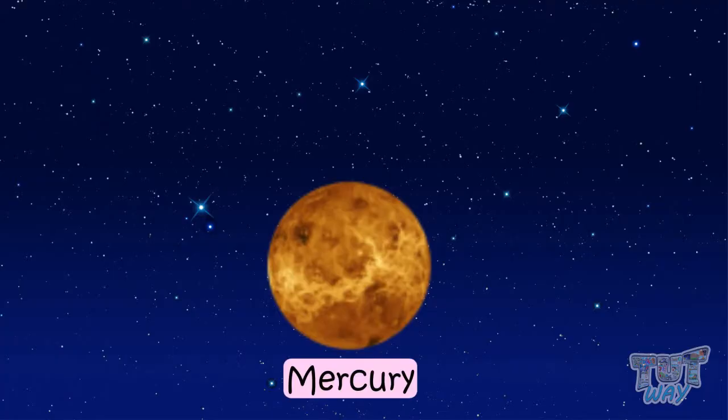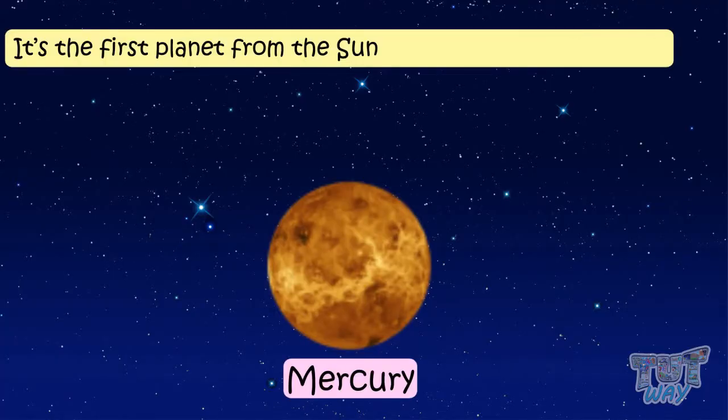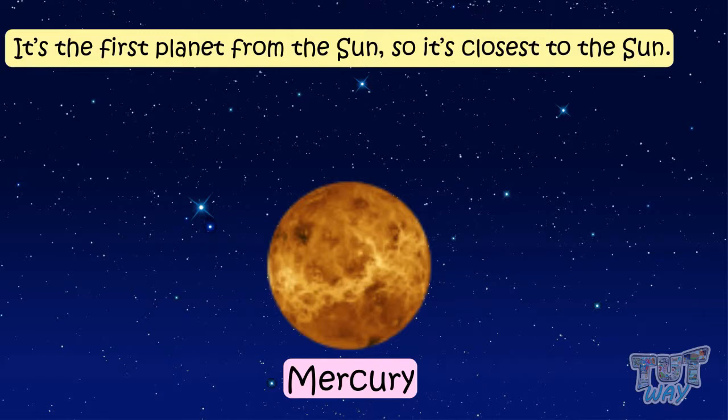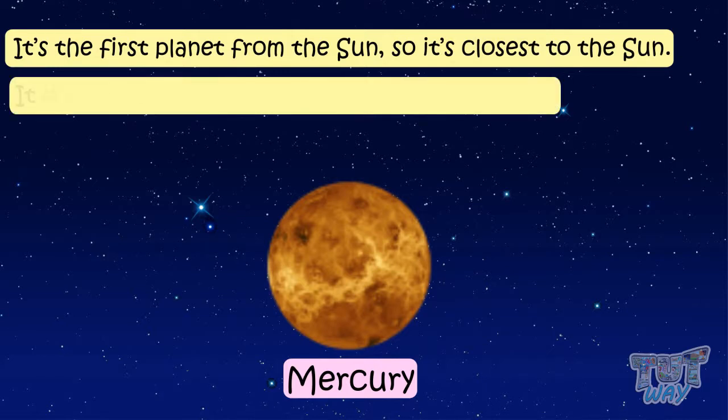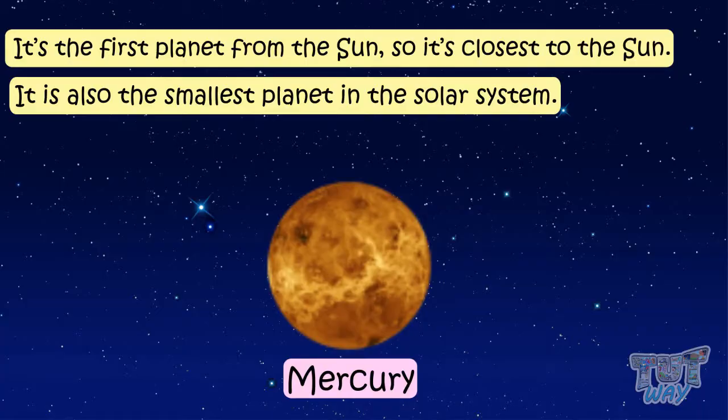Mercury. It's the first planet from the sun. So, it's closest to the sun. It is also the smallest planet in the solar system.